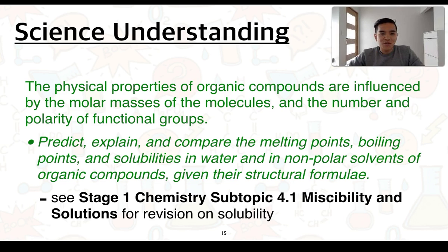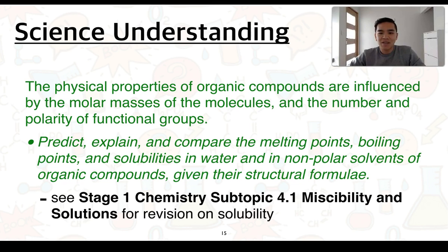In part 2 of 3.1, we're going to focus on one science understanding: the physical properties of organic compounds that are influenced by the molar masses of the molecules and the number and polarity of functional groups. You'll need to be able to predict, explain and compare the melting points, boiling points and solubilities in water and in non-polar solvents of organic compounds given their structural formulae. You should also refer back to stage 1 chemistry subtopic 4.1 on miscibility and solutions, because this goes through the concepts of solubility.